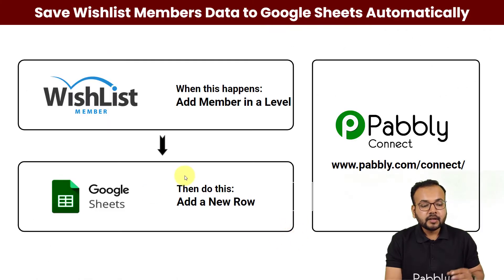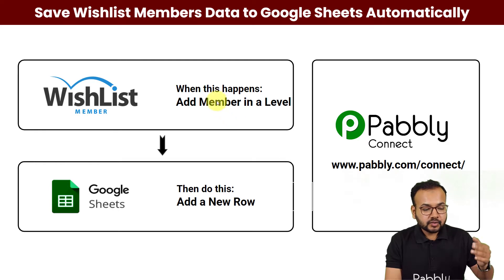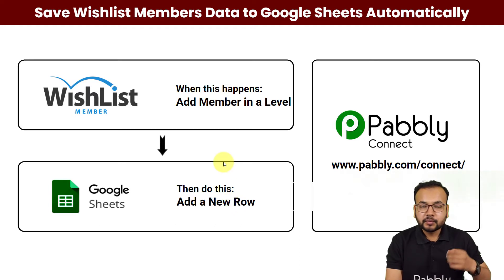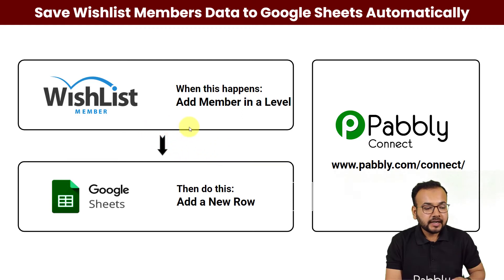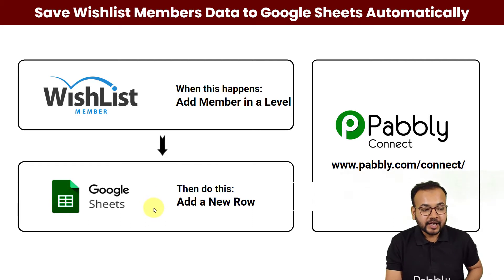Here's how the automation flow is going to work: as you add a member in WishList Member at a level, that same member's data is going to be transferred and added as a new row in Google Sheets automatically. Many times we need to save the data of our members to nurture or engage them, and with this automation you don't have to copy and paste data manually into Google Sheets, which would take a huge amount of time.